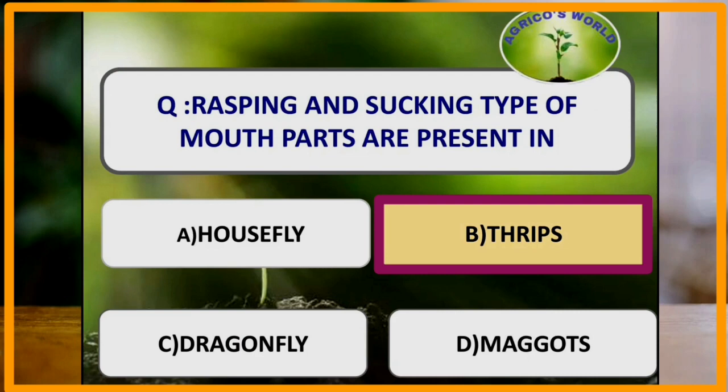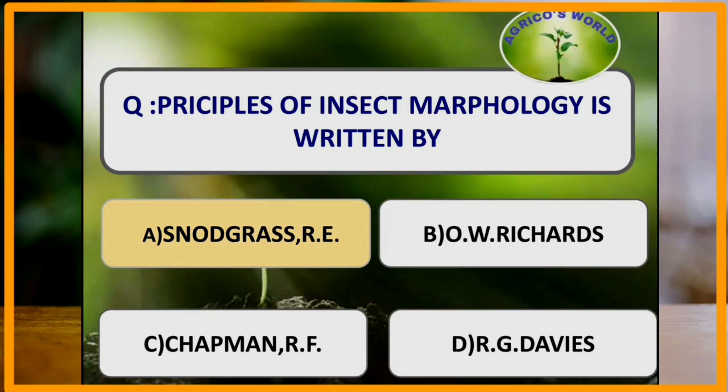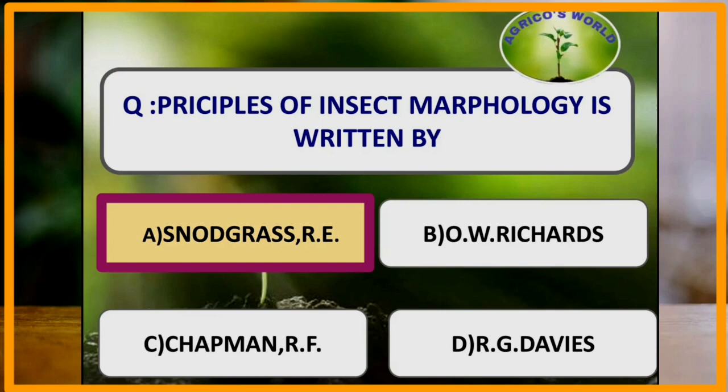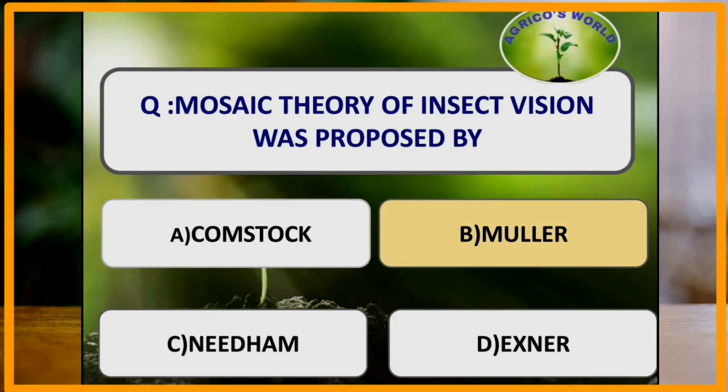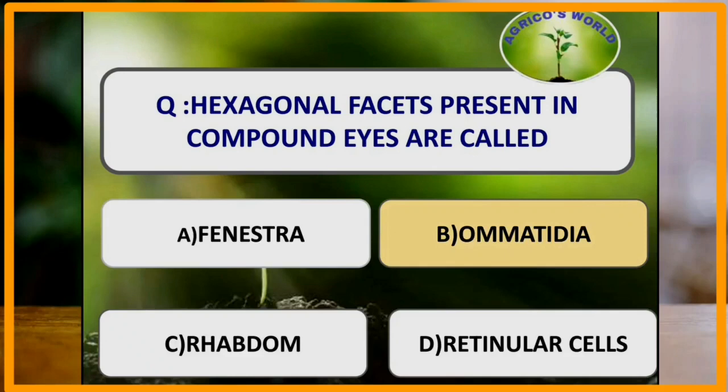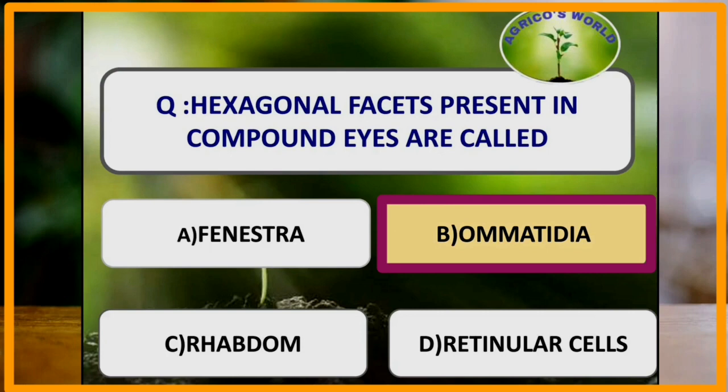Principles of Insect Morphology is written by which scientist? The book Principles of Insect Morphology is written by Snodgrass. Mosaic theory of insect vision was proposed by which scientist? Hexagonal facets present in the compound eyes are called ommatidia. Ommatidia are the hexagonal facets present in the compound eyes of insects.